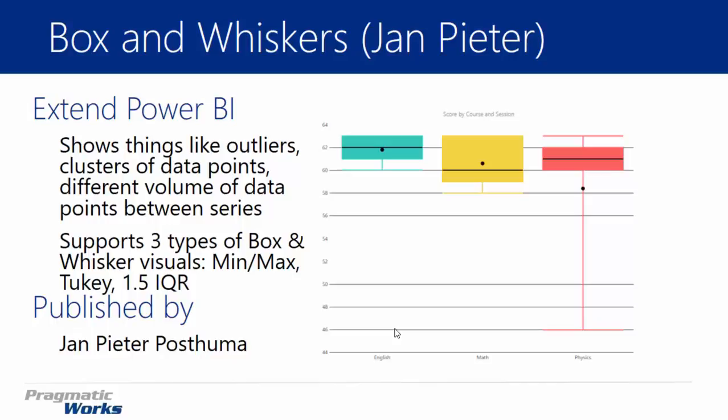Box and whiskers charts are an easy way of examining one or more sets of data graphically. The chart may be a little confusing at first to read, but it does have some advantages — it takes up much less space and it makes it much easier to look at and compare a distribution of values. It lets you see things like outliers, clusters of data points, and different volumes of data points in different series, and all these different lines and boxes have meaning.